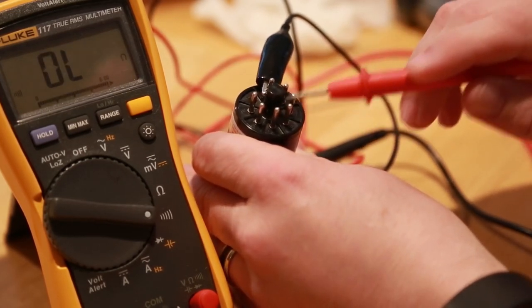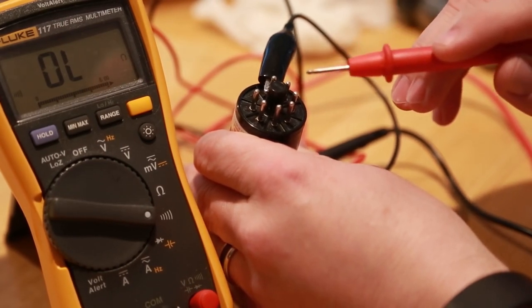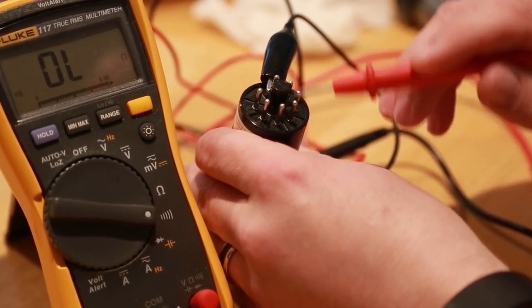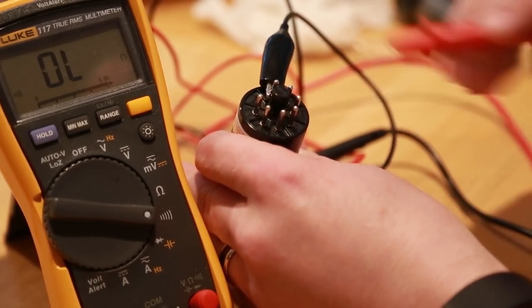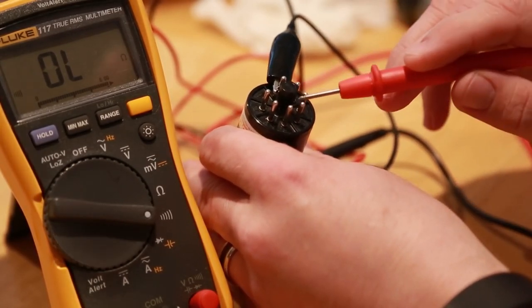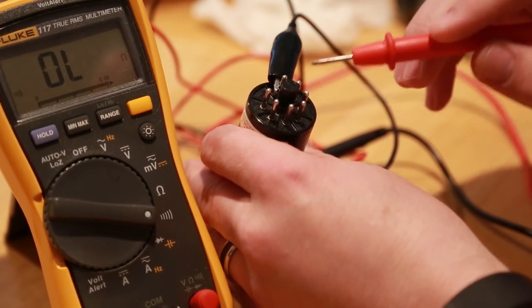So the anode is what puts your high voltage, and that can be anywhere from a couple hundred, 250 to up to 500 volts depending on the amp. Mine, it was a 500 volt-ish level rail that blew up all of the heaters on most of the other tubes and several resistors in the amp.